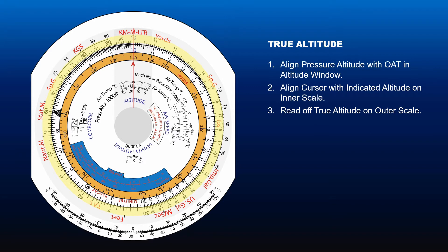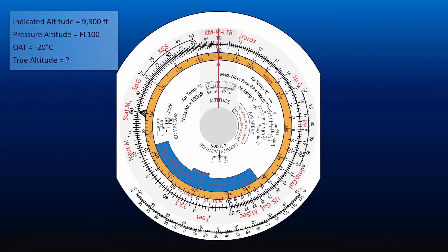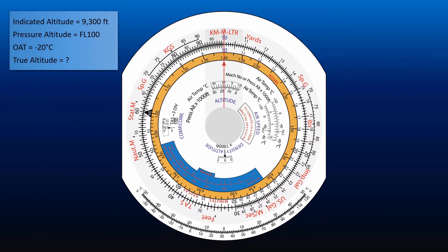An example will make the procedure clear. If the indicated altitude obtained with QNH set is 9,300 feet, and the pressure altitude obtained with 1013.2 millibar set is 10,000 feet, with the outside air temperature of minus 20 degrees Celsius — what is the true altitude? First, align the pressure altitude, 10,000 feet, with outside air temperature, minus 20 degrees Celsius, in the altitude window.